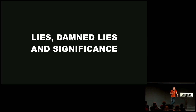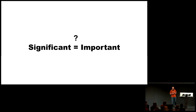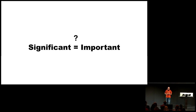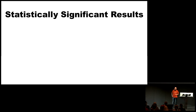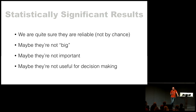Next, I want to talk about statistical significance — a slightly more technical topic. The issue with statistical significance is one of the most unfortunate terms in statistics, because in everyday life, when we talk about something as a significant event, we also consider it important. In statistics, we don't really have this idea of something significant also being important. When we look at statistically significant results, we are simply a little bit more sure that the results are reliable and not by chance. It doesn't mean the results are important, big, or even useful for any decision process.